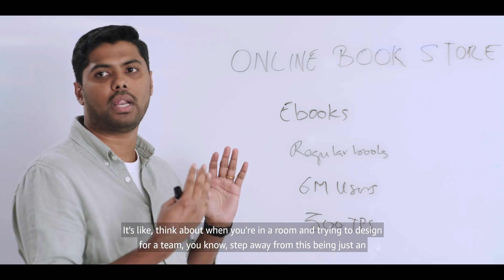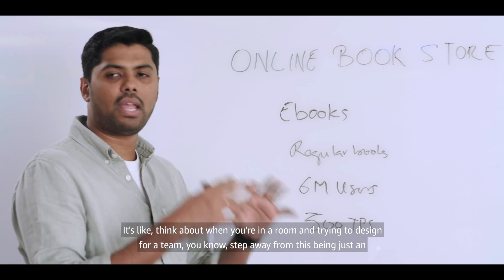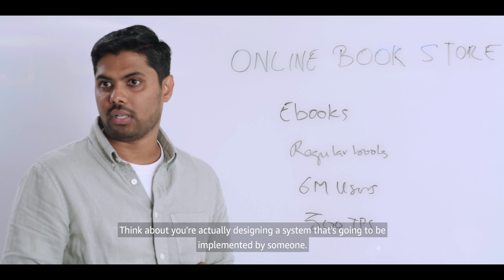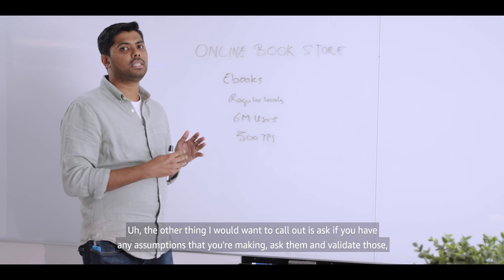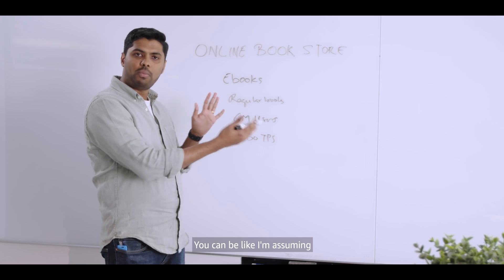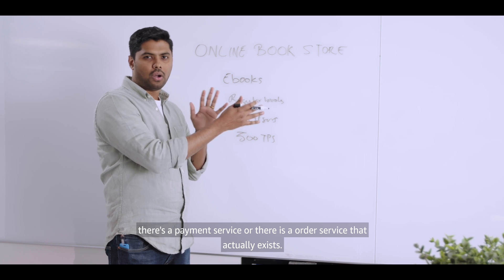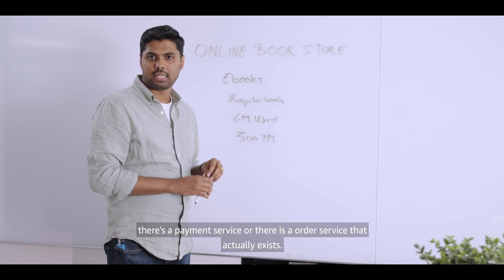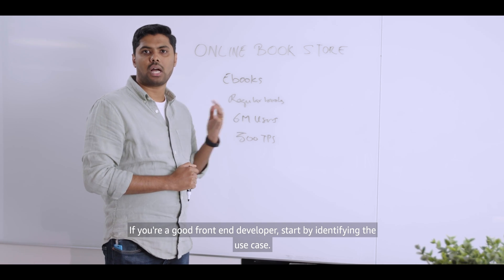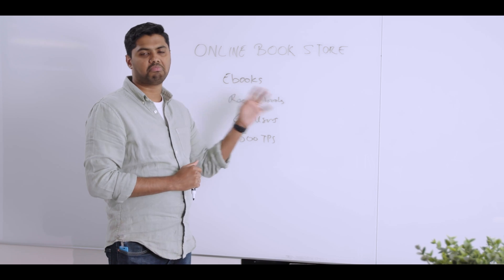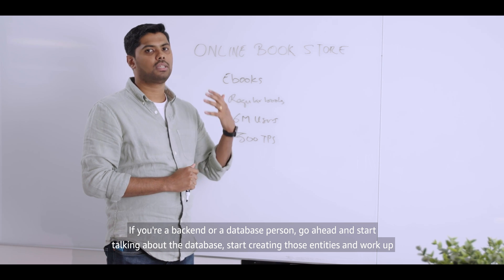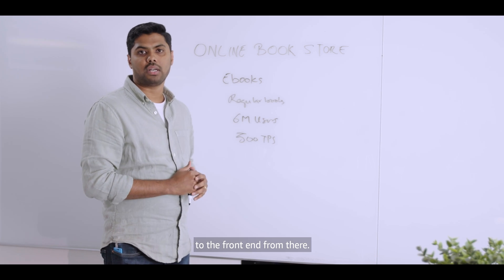Think about when you're in a room designing for a team. Step away from this being just an interview — think about you're actually designing a system that's going to be implemented by someone. Also, if you have any assumptions, ask and validate those. For example, you might say: I'm assuming there's a payment service or an order service that already exists. Focus on your strengths — if you're a front-end developer, start with the use case and the front-end. If you're a back-end or database person, start with the database entities and work up from there.